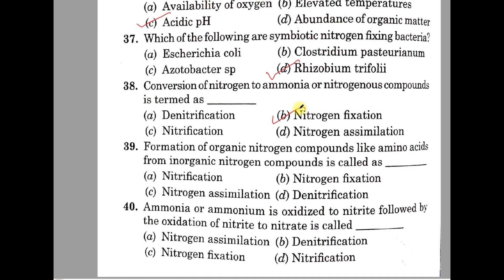Question number 39. Formation of organic nitrogen compounds like amino acids from inorganic nitrogen compounds is known as A: Nitrification, B: Nitrogen fixation, C: Nitrogen assimilation, D: Denitrification. The correct answer is C, Nitrogen assimilation.